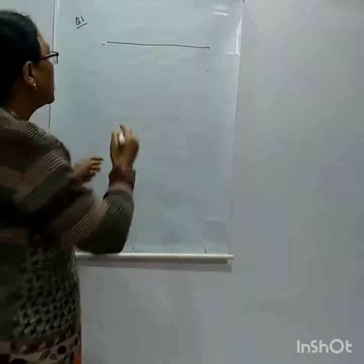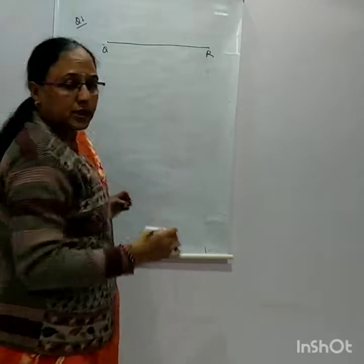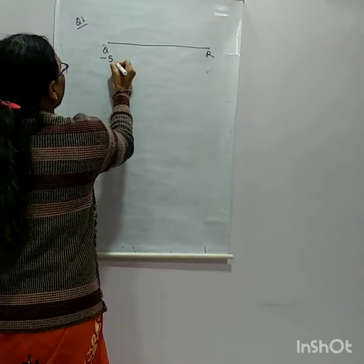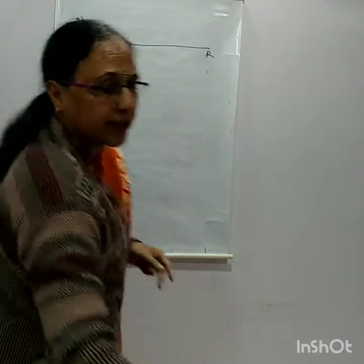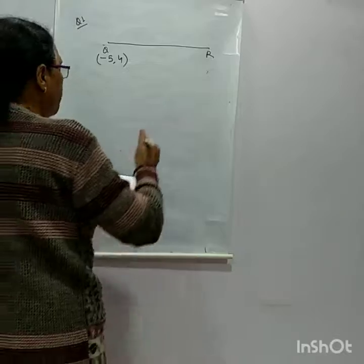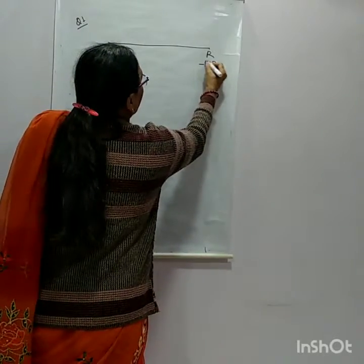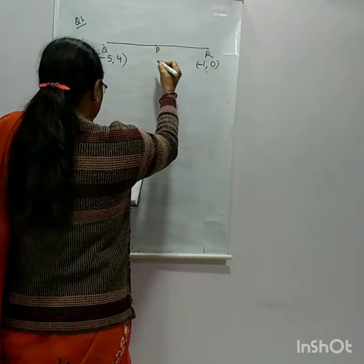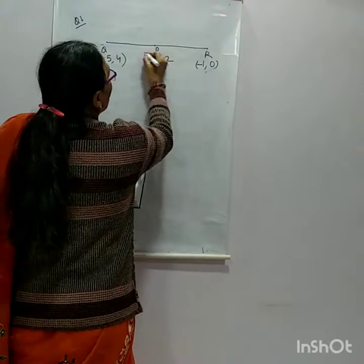Q is given as (-5, 4) and R coordinates are given as (-1, 0), and here P is the midpoint, which is given as (A/3, 2).